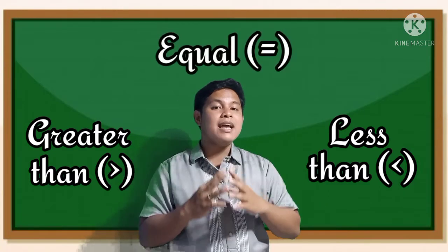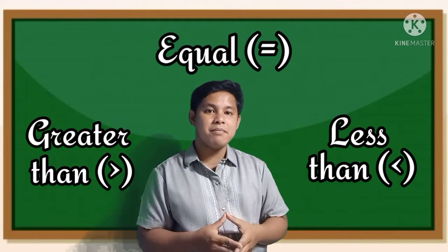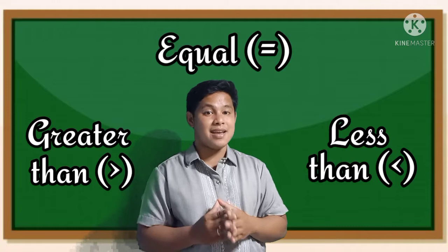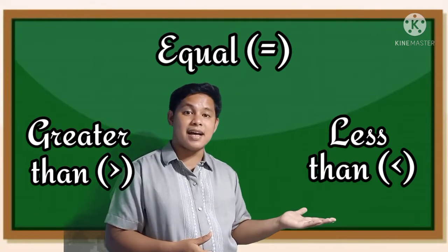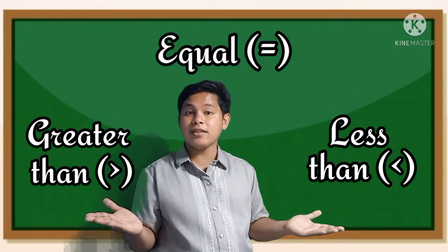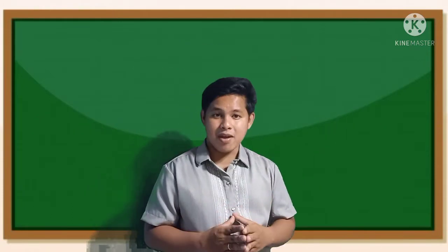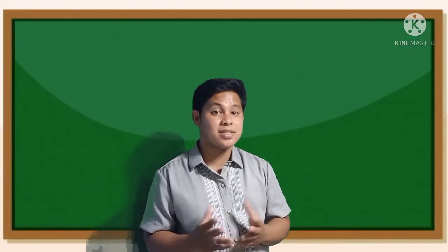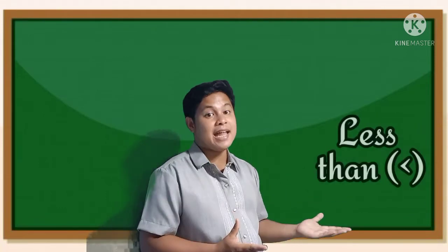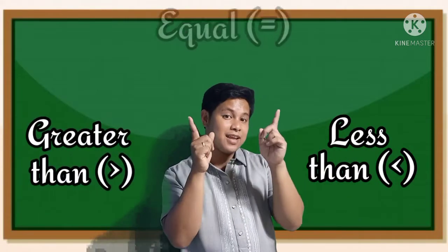And we use equal if the number is the same as the other number. Again, in comparing numbers, we have three symbols that we can use: less than, greater than, and equal.